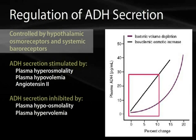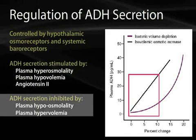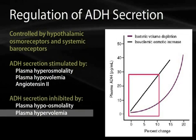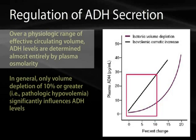ADH secretion is controlled by both the hypothalamic osmoreceptors and the systemic baroreceptors. ADH secretion is stimulated by a rise in osmolality and inhibited by a fall in osmolality. It is also stimulated by a decrease in effective circulating volume and inhibited by plasma hypervolemia. The graph reflects these two major mechanisms: the black solid line reflects osmotic control of ADH secretion — as osmolality increases, ADH proportionally and directly increases.